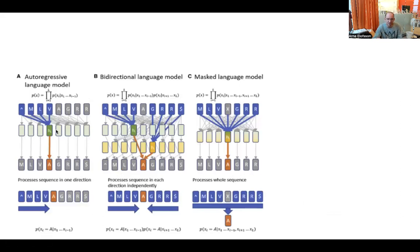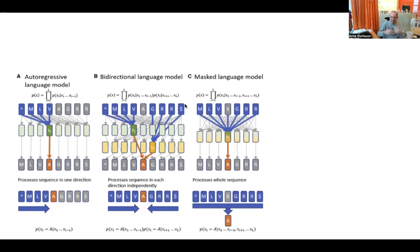Early methods were autoregressive language models: you have an MLP and you pick the next token, modeling the probability of finding the next item given those before it. It only goes one direction. Then people developed bidirectional models — basically the same thing but going in both directions, weighting them together. Nowadays what people use is masking: you mask out a sentence or some tokens. In AlphaFold they mask about 50 percent randomly, and you try to predict the masked tokens as part of your training.